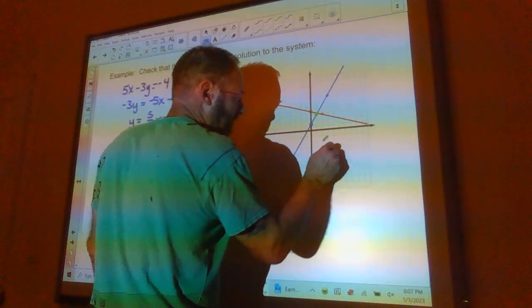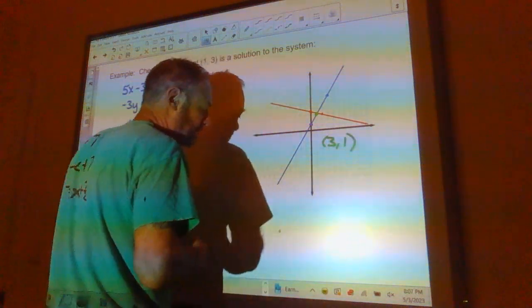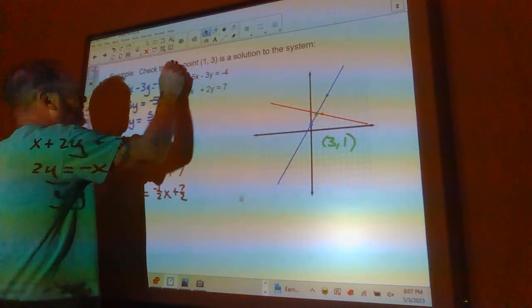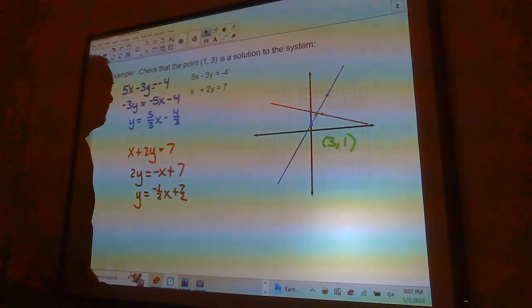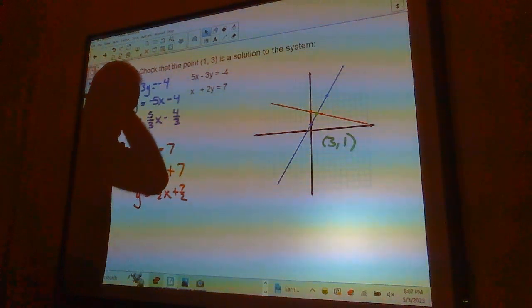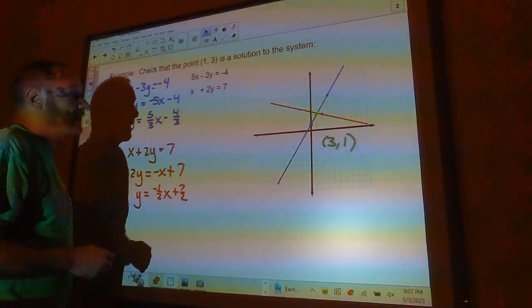And they appear to intersect right there. So that appears to be the point (3, 1). Graphically, that's my solution. Now if I'm doing a graphing one, I'm checking my answer to make sure it's right.